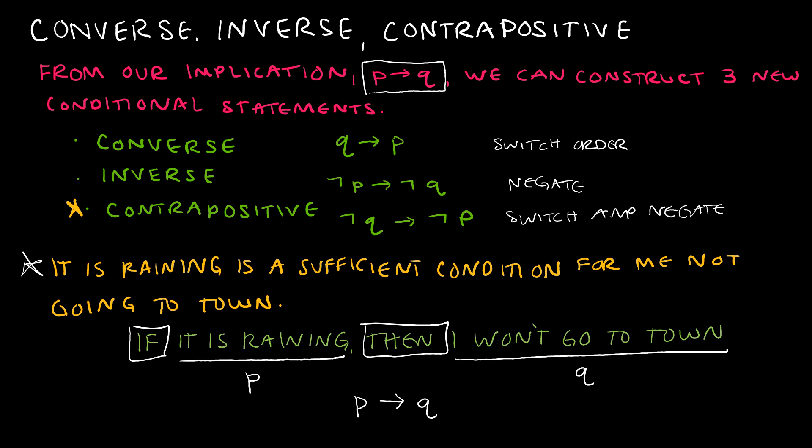Now we find the converse, inverse, and contrapositive. The converse is 'if q then p': if I don't go to town, then it is raining. All I did was switch the order — I did not change any positives or negatives. The inverse is 'if not p then not q': if it is not raining, then I will go to town. Negating a negative makes it positive, so 'I won't go to town' becomes 'I will go to town.'